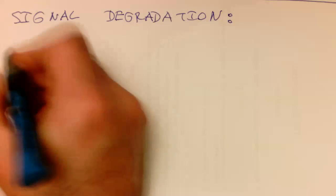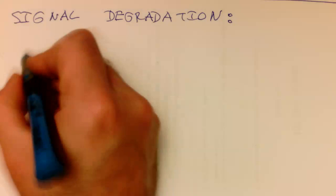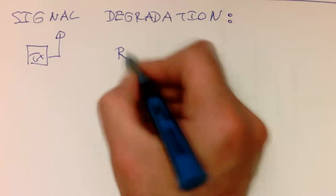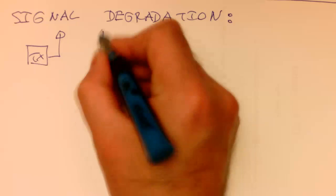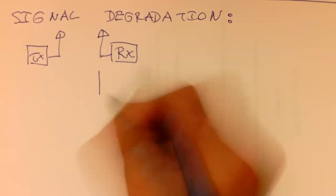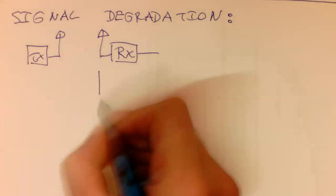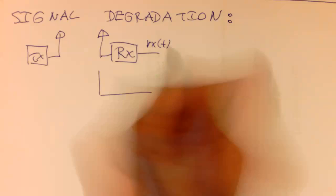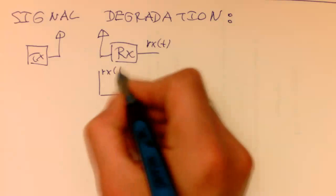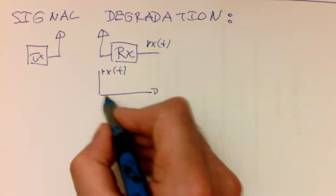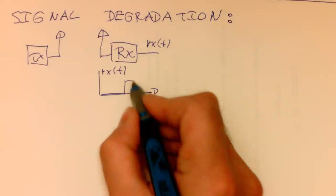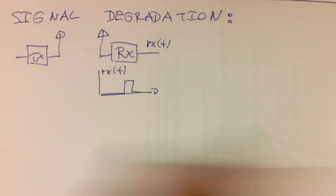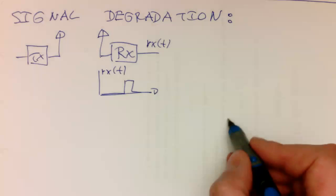Imagine we have our transmitter and our receiver quite close by. Then the received signal we are getting out here at this point, if we call this Rx of t, this will probably still look like our pulse what we had here sent in. Now let's just imagine this is further apart.